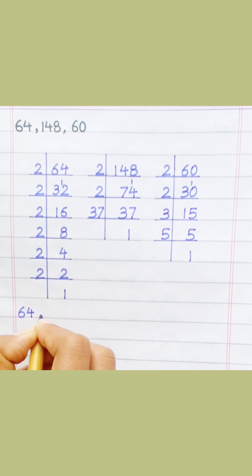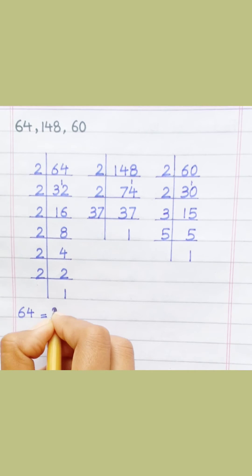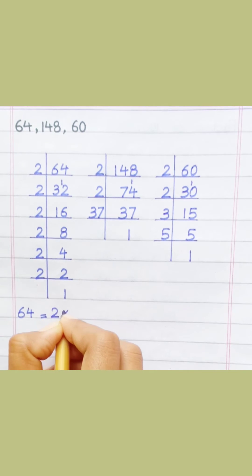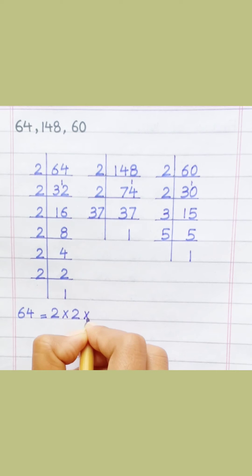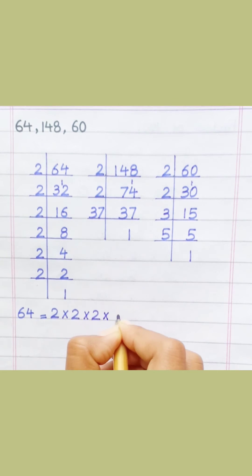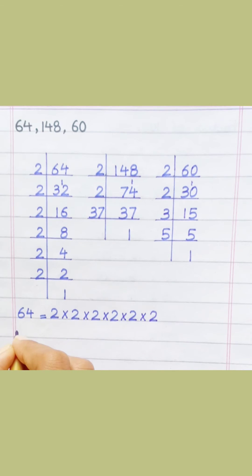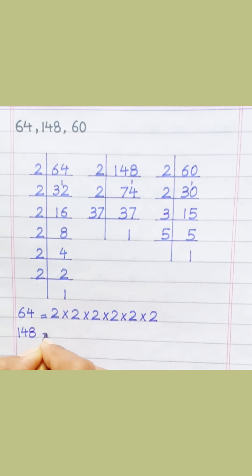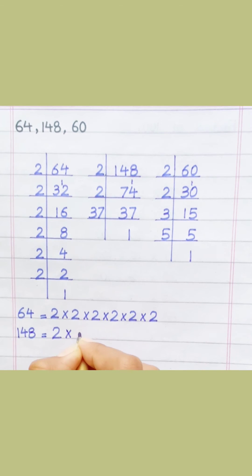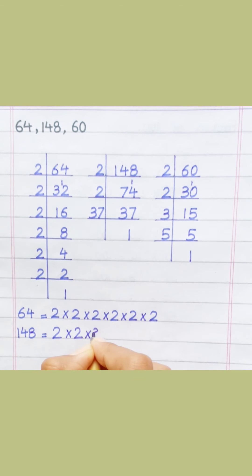Sixty-four equals two multiply two multiply two multiply two multiply two multiply two multiply two multiply two. One hundred forty-eight equals two multiply two multiply thirty-seven.